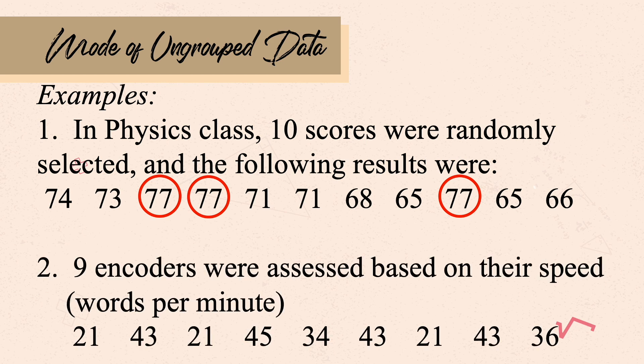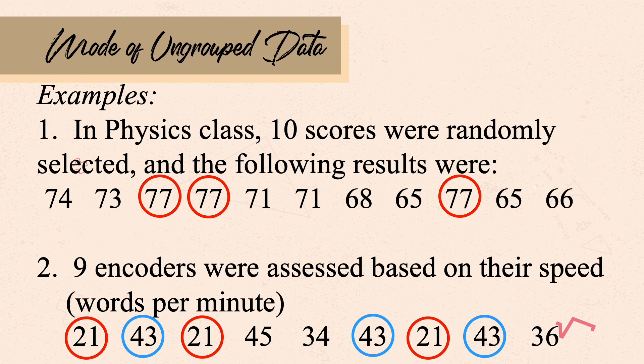Another example: nine encoders were assessed based on their speed in words per minute. With this data, we can see that there are two modes — 21 and 43 — since they are the values most frequently seen in the given data set.